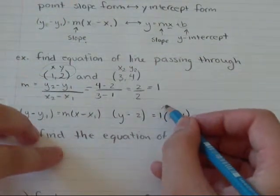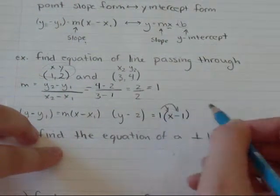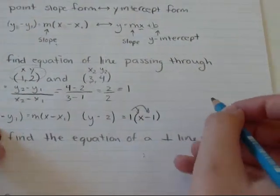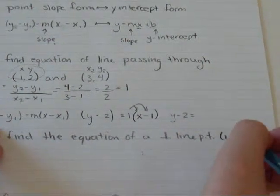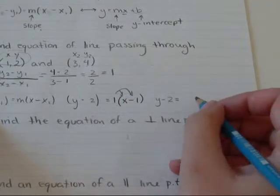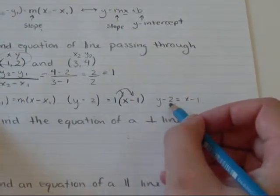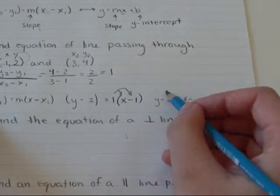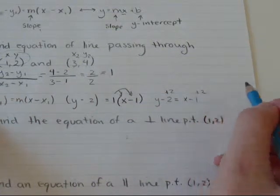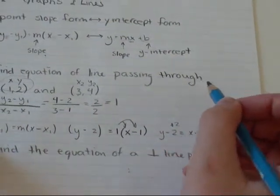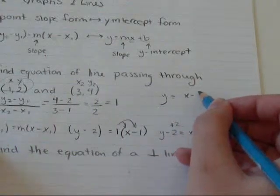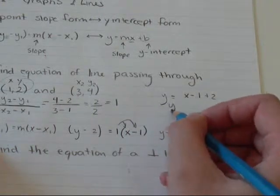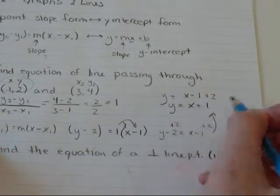The first thing I'm going to do is distribute this 1. And it's not going to be very exciting. y minus 2 equals x minus 1. I'm going to pull the 2 over to this side. So, plus 2, plus 2. And I'm just going to draw this up here because I've run out of space. y equals x minus 1 plus 2. y equals x plus 1.